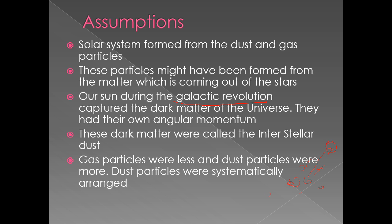The Sun was going through a galactic revolution during which it captured the dark matter of the universe, and this dark matter had its own angular momentum. These dark matter particles were called interstellar dust.